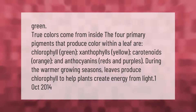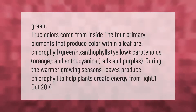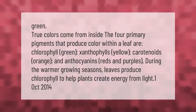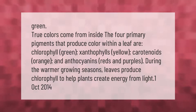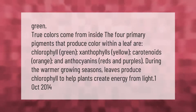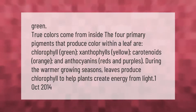The true colors come from inside the leaf. The four primary pigments that produce color within a leaf are chlorophyll (green), xanthophylls (yellow), carotenoids (orange), and anthocyanins (reds and purples). During the warmer growing seasons, leaves produce chlorophyll to help plants create energy from light.